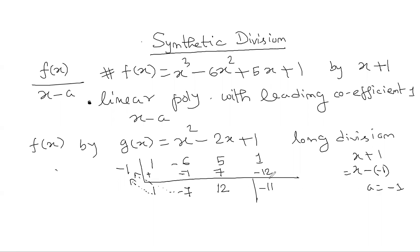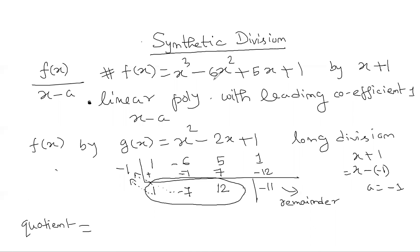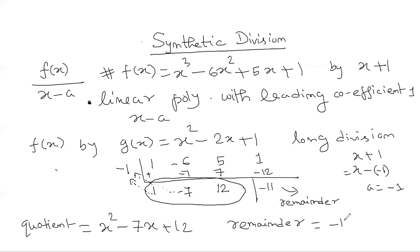The last term, minus 11, represents the remainder. This part determines the quotient. Since we divided a degree-3 polynomial by a linear polynomial, the quotient is a polynomial of degree 2 — one less than the degree of f(x). The coefficients give us: x squared with coefficient 1, x with coefficient minus 7, plus 12. So the quotient is x squared minus 7x plus 12 and the remainder is minus 11.